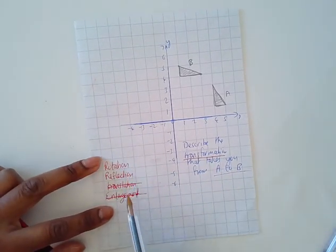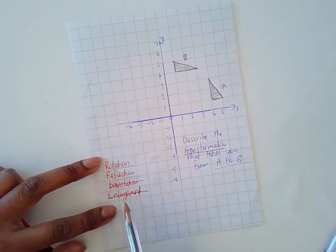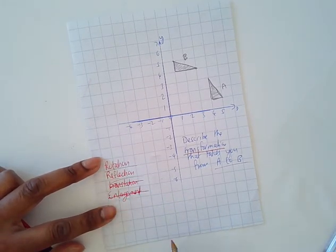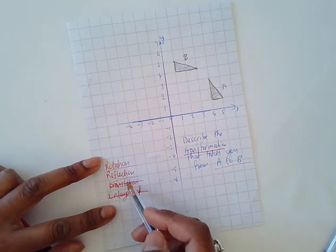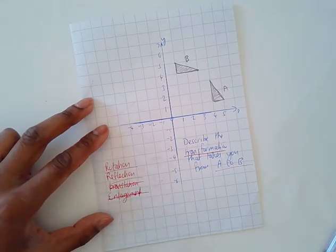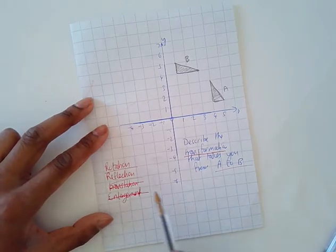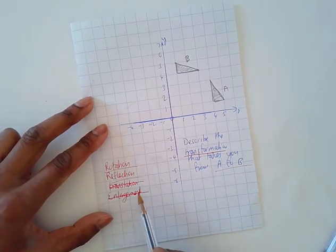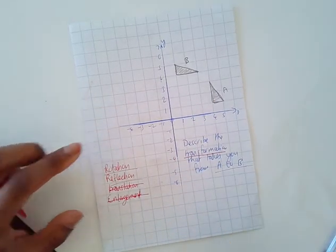It could be all of these - well, it can't be all of them. Sometimes it could be two things, but I need to find out. I need to specify one of those. First of all, we need to know it can't be an enlargement - there's no chance of that being an enlargement.